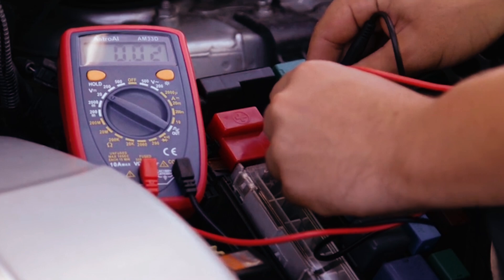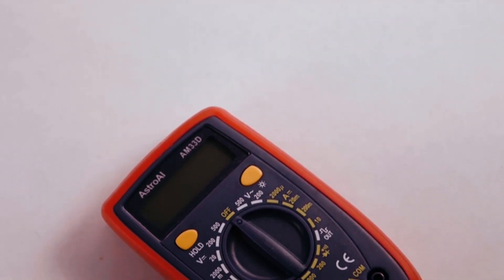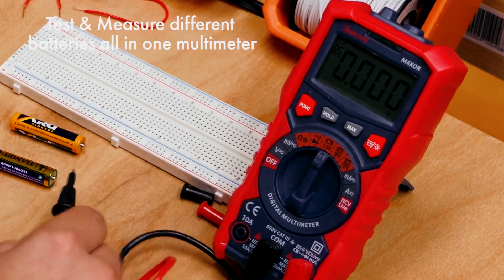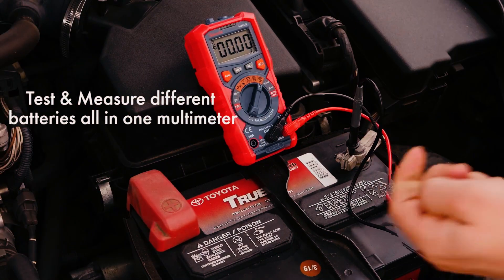Also, make sure your meter can handle both AC and DC voltage. Some meters only measure one type, so double-check that you've got the right setting for the type of voltage you're testing.